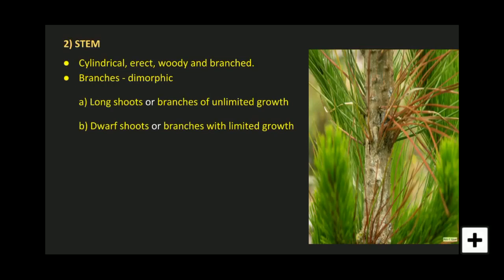The stem is cylindrical, erect, woody, and branched. The branches are monopodial and dimorphic. Monopodial branches are branches growing upward with a single main stem or axis, which is why Pinus shows a pyramidal appearance. You can take the example of the Ashoka tree. Pinus trees show monopodial branching.